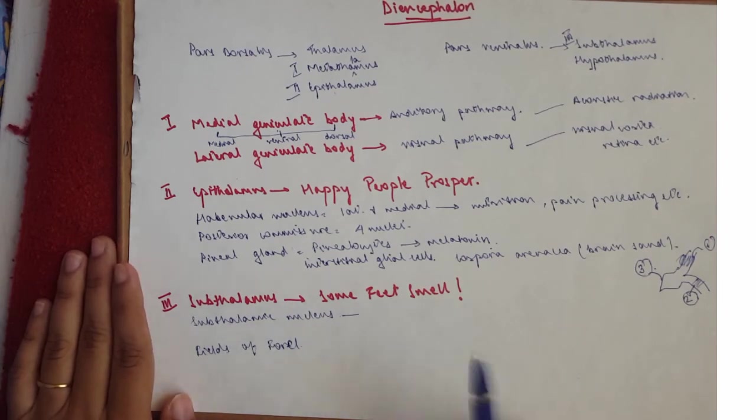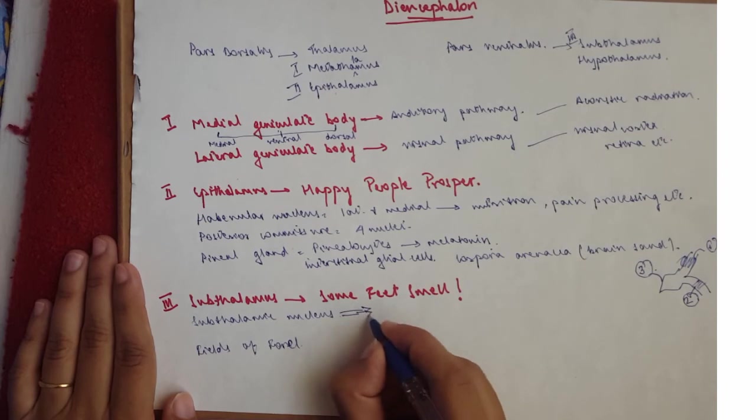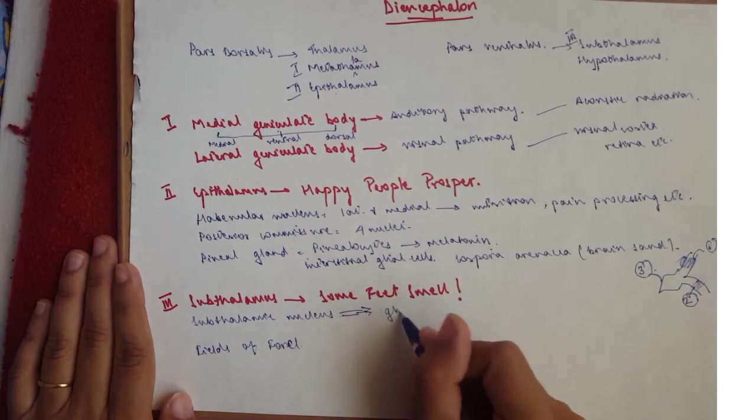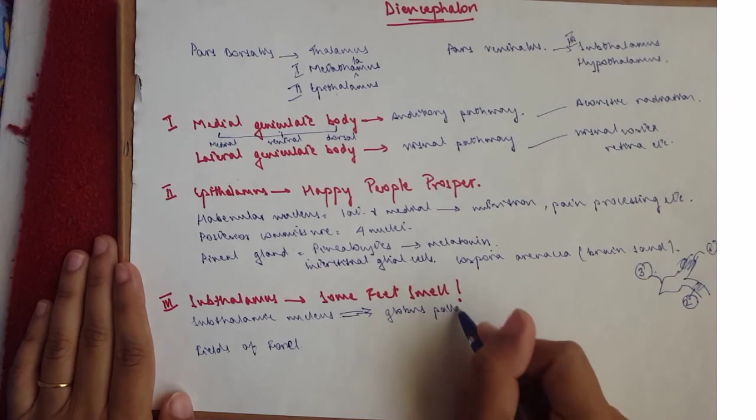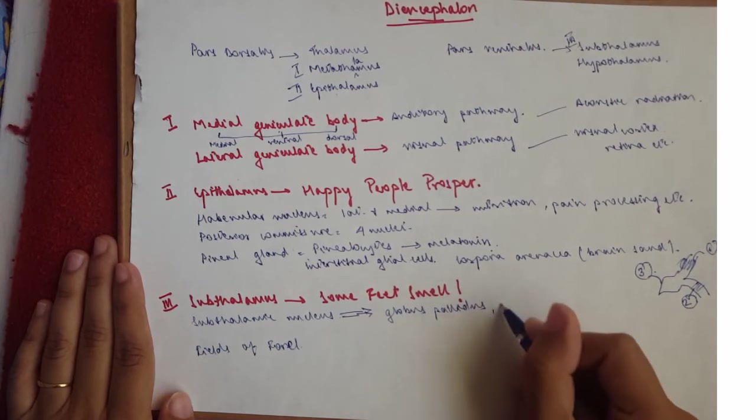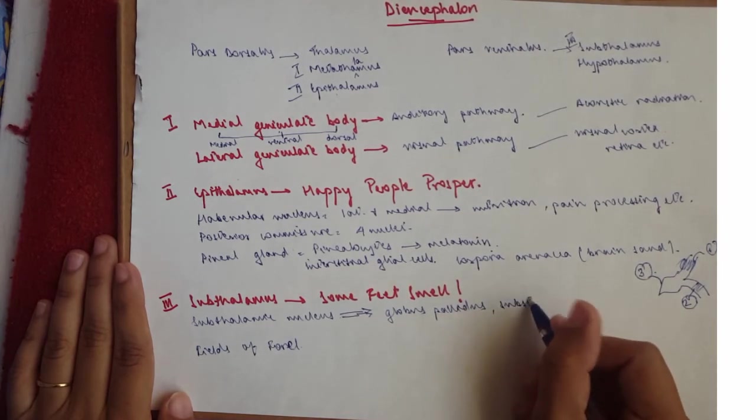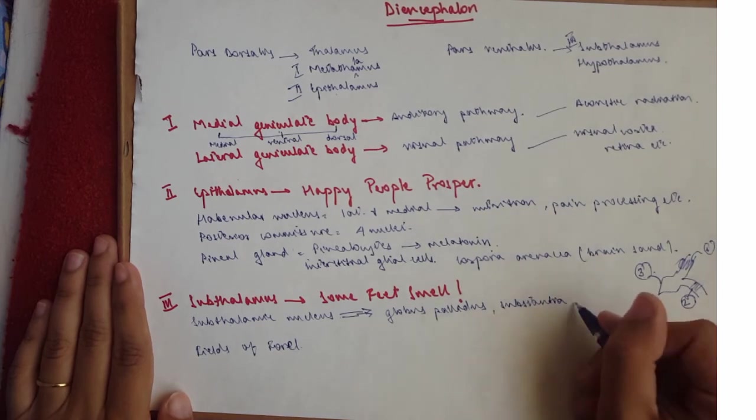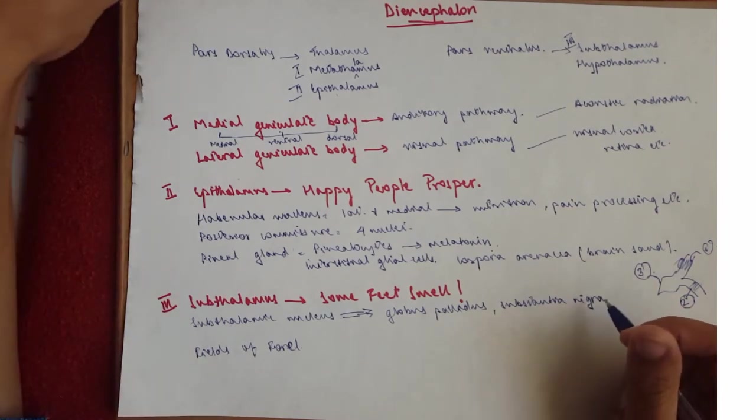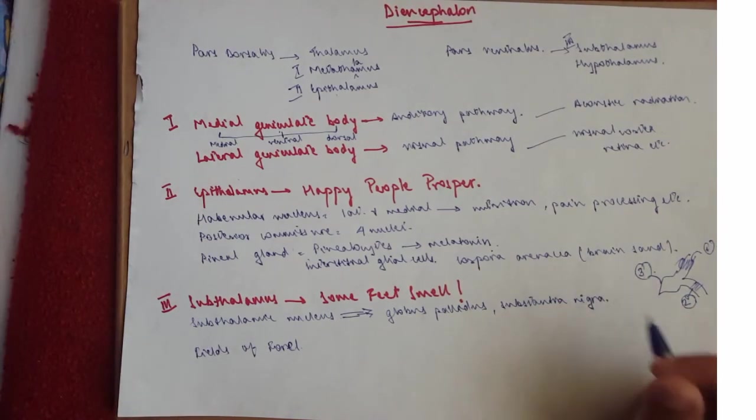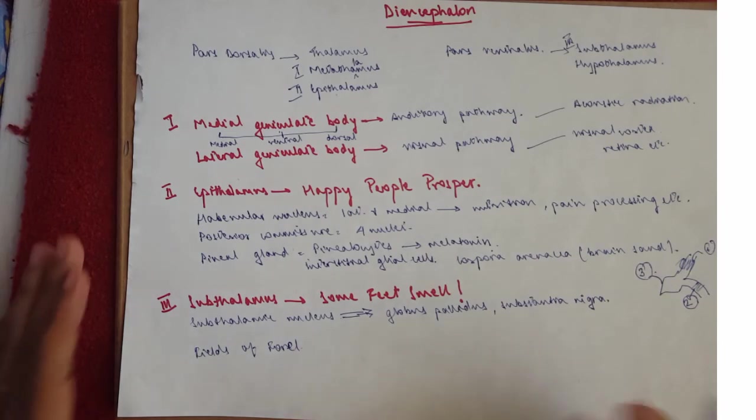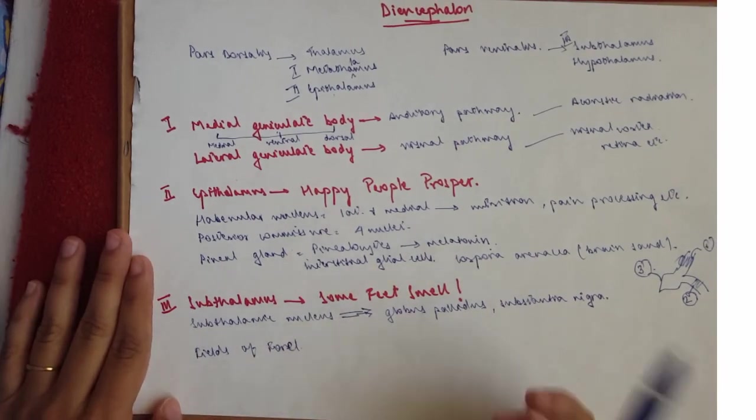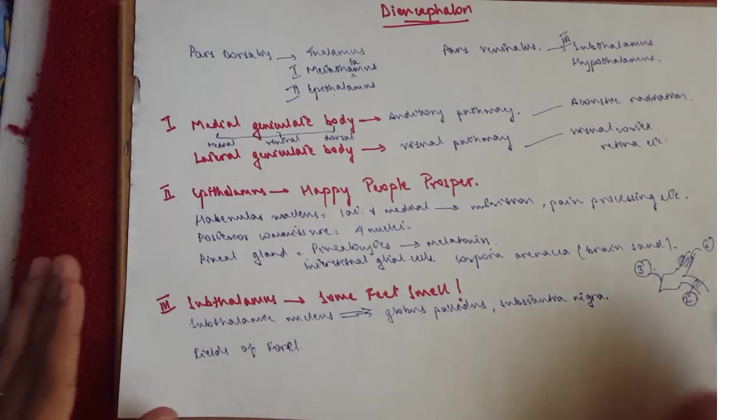So you need to know that the subthalamic nucleus sends or projects fibers onto the globus pallidus and substantia nigra. And when this part is damaged, it leads to violent, uncontrolled, involuntary movements of the contralateral side of the body, not the same side.